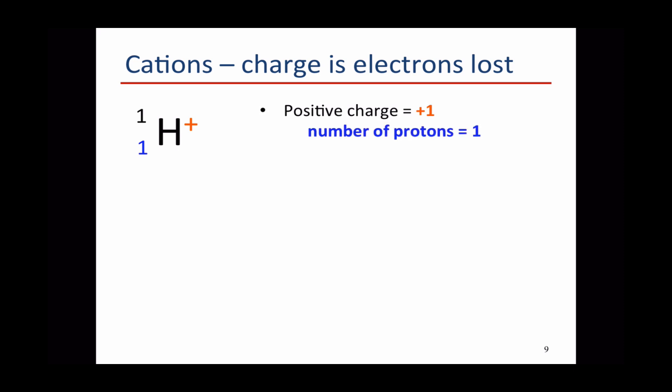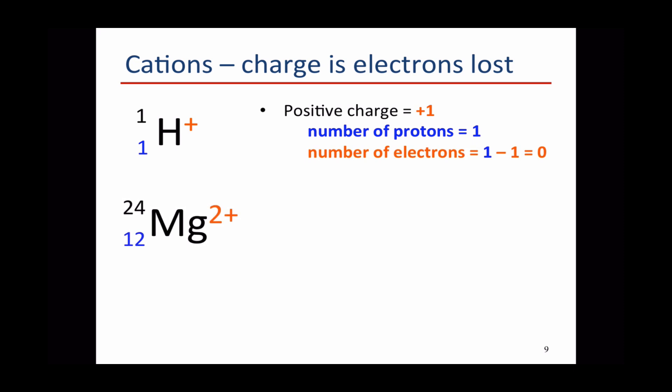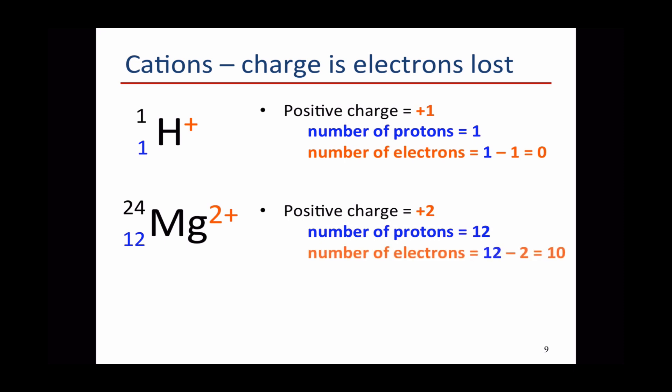A neutral hydrogen atom has one electron and one proton, so if it's lost an electron, it has 1 minus 1 — none left over. A magnesium atom has 12 electrons. Magnesium 2+ has a positive charge of 2, so if the neutral atom has 12 protons and 12 electrons, a magnesium that's lost 2 electrons has 12 minus 2, leaving 10 electrons.